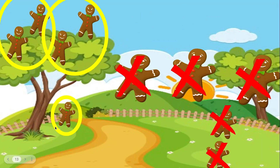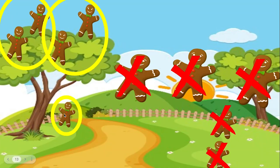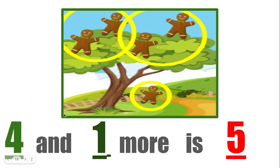Now I want you to circle 1 more. We circle the 4 up here and we add 1 more. How many gingerbread men are circled in all? 1, 2, 3, 4, 5 gingerbread men. 4 and 1 more is 5.